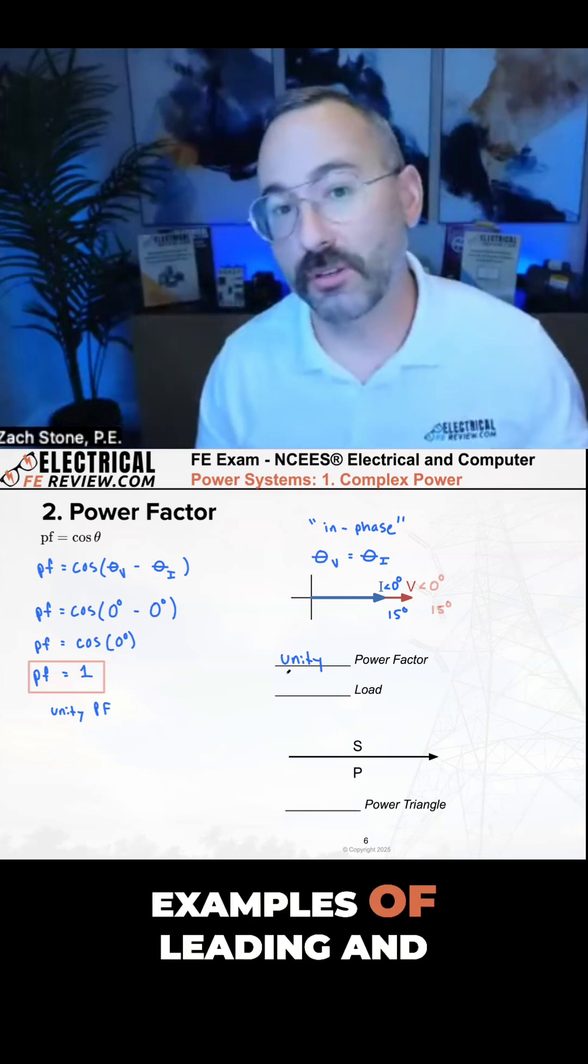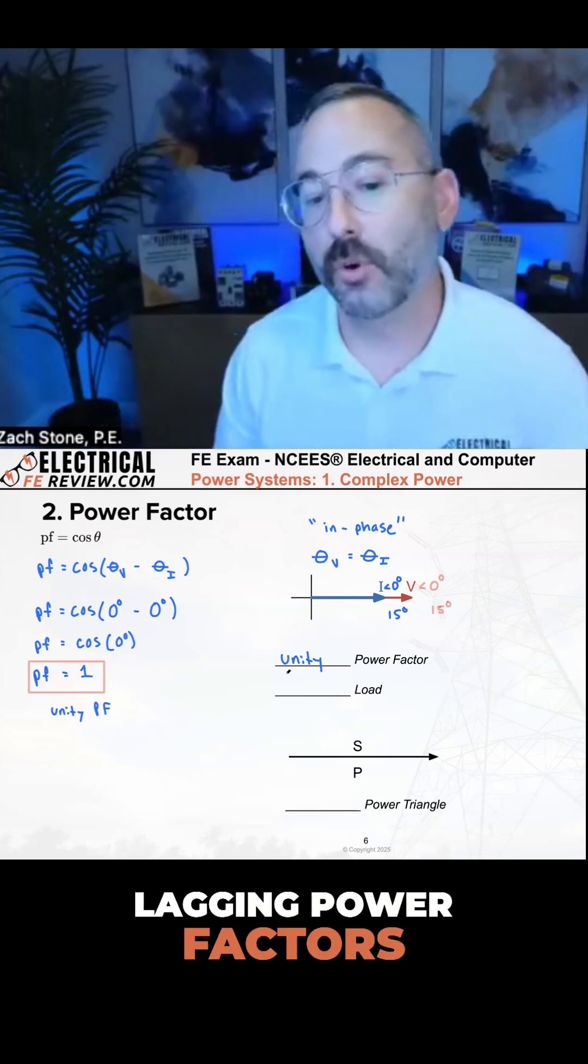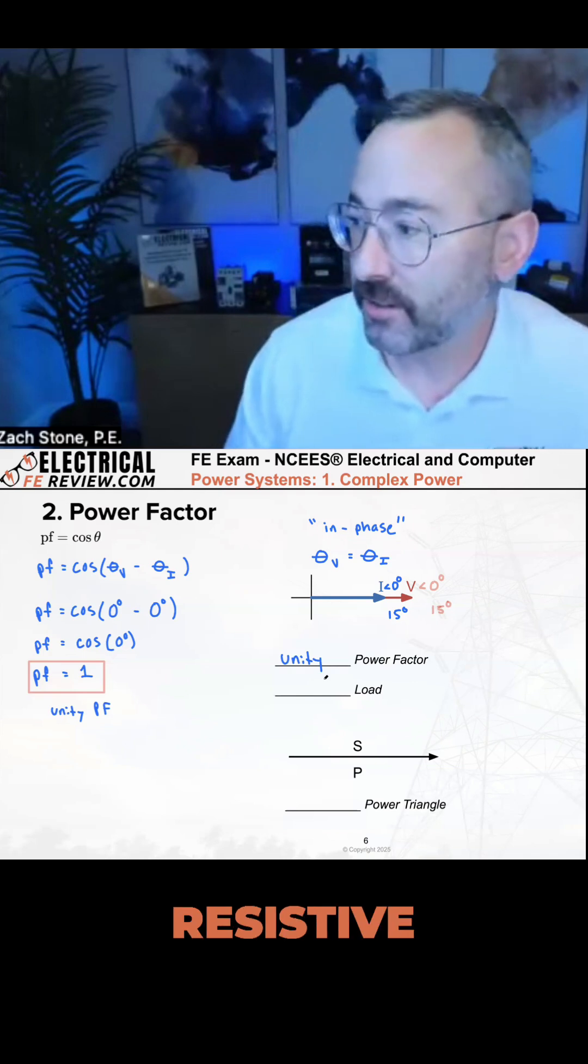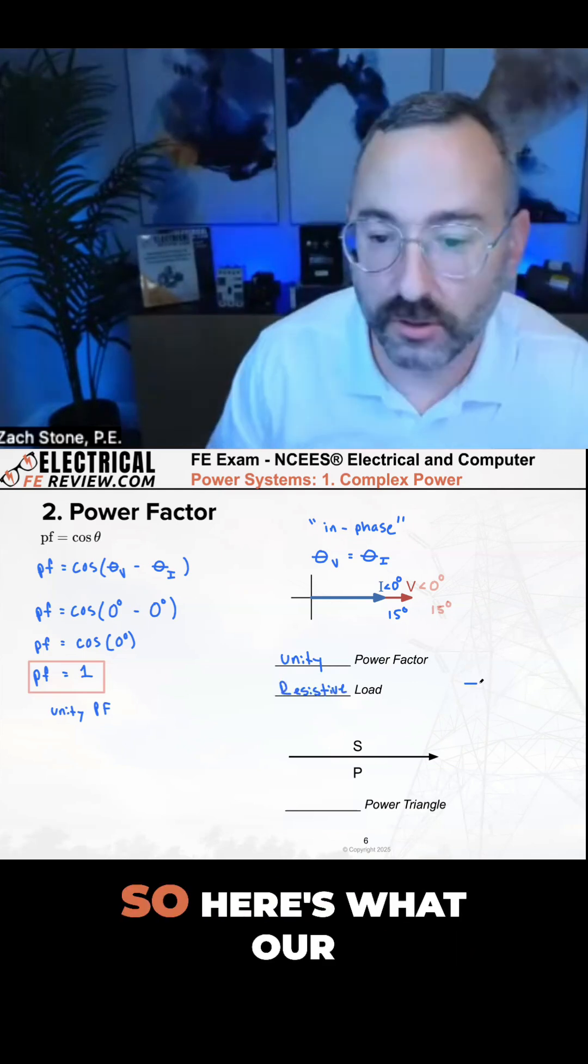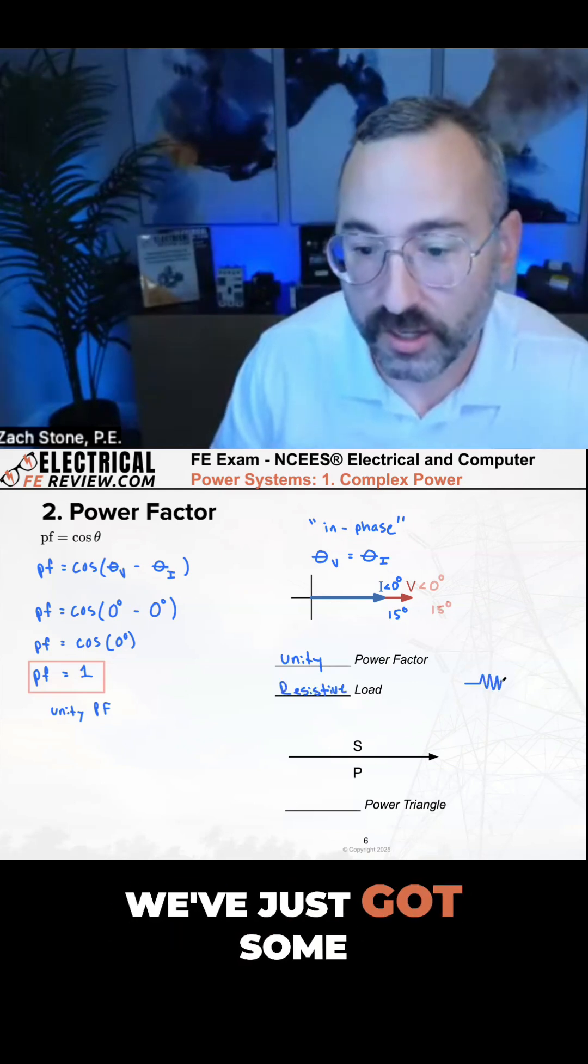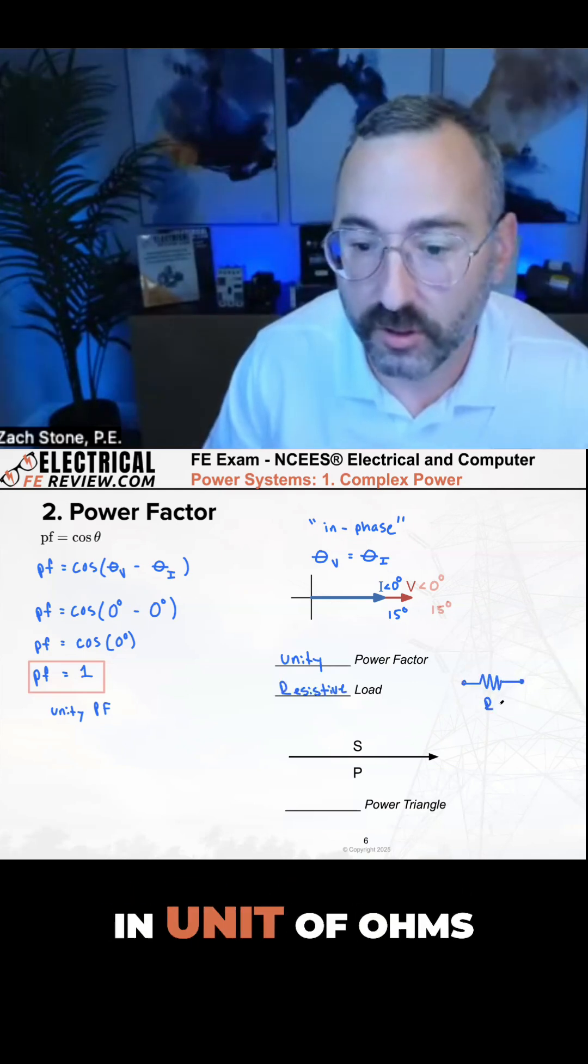Those were from previous examples of leading and lagging power factors. What's the only kind of load? Yeah, resistive. This is a resistive load. So here's what our load looks like - we've just got some resistor in units of ohms.